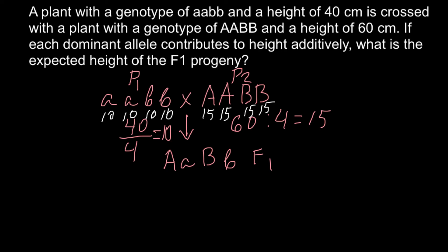So here for the F1 generation it's easy to calculate now. Capital A would give 15 cm, small a would give 10 cm, capital B would give 15 cm, and small b would give 10 cm. As you see, if we add all these numbers we are going to get 50 cm.